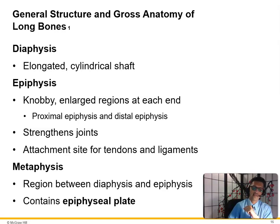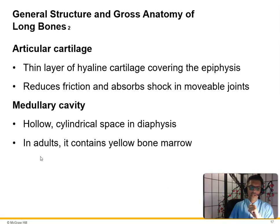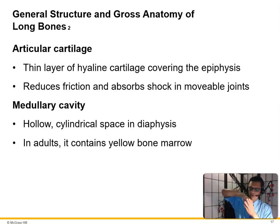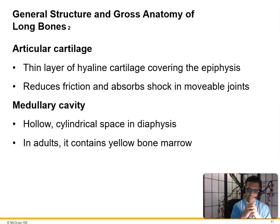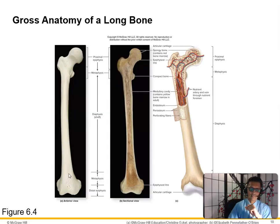Articular cartilage is a thin layer of hyaline cartilage covering the epiphysis. It reduces friction and absorbs shock in movable joints. When people say they're 'bone on bone,' the articular cartilage is worn out. Since mature cartilage has no blood supply, once it's gone it's gone, and patients often need total knee or hip replacements. The medullary cavity is the hollow cylindrical space in the diaphysis containing yellow bone marrow.